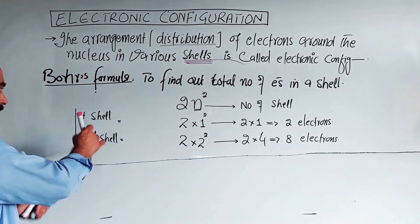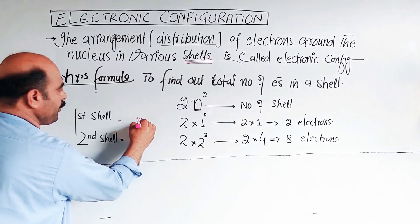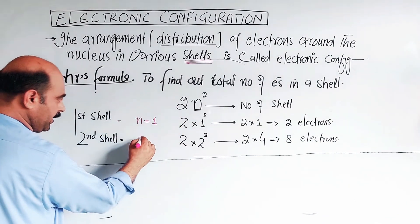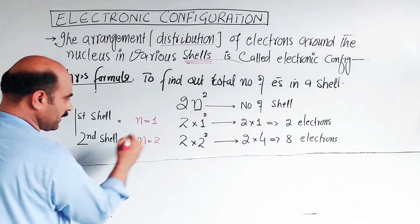Second shell: 2 multiplied by 2 squared. Two square is four, so 2 times 4 equals 8 electrons.